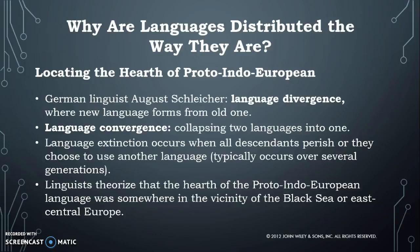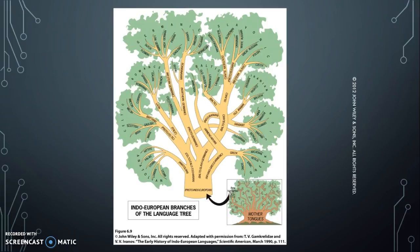If we were to theorize where the hearth of Proto-Indo-European was, we would place it somewhere in the vicinity of the Black Sea or maybe east-central Europe. The language tree is a great visual aid to help figure out where languages come from and what the relationships between them are. What we've got here is one small branch — the Indo-European language tree — with Proto-Indo-European at the very bottom as the main branch, splitting off into other languages, which then split off into still others, until at the ends we get the languages we speak today.